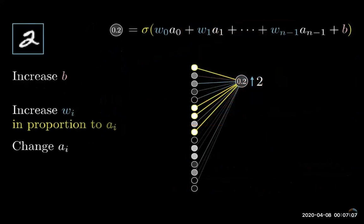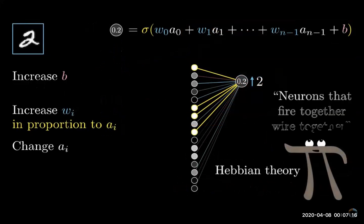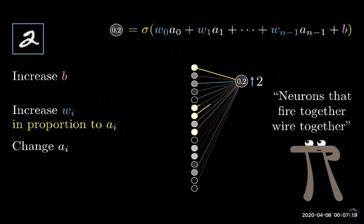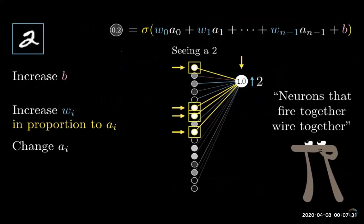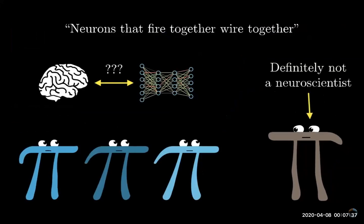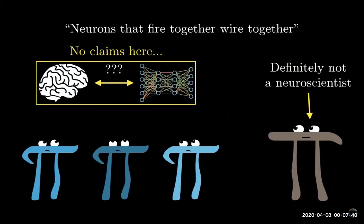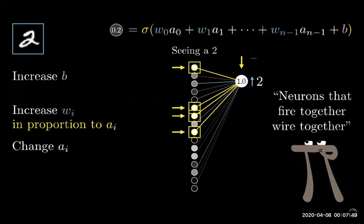In neuroscience, there's a theory for how biological networks of neurons learn, often summed up in the phrase 'neurons that fire together wire together.' Here the biggest increases to weights happens between neurons which are the most active and the ones which we wish to become more active. To be clear, I'm not in a position to make statements about whether artificial networks behave like biological brains, but taken as a very loose analogy, I do find it interesting to note.